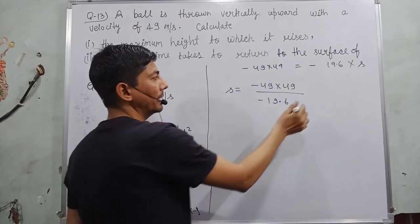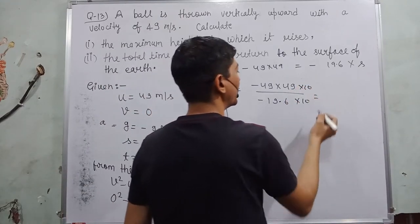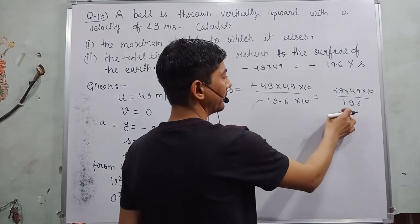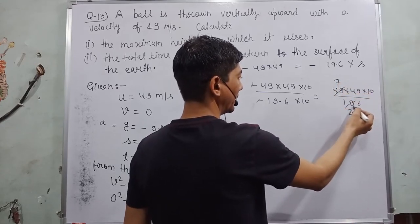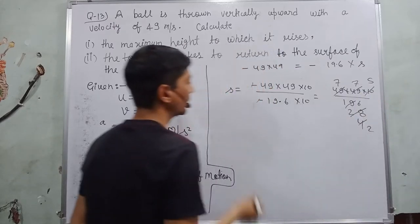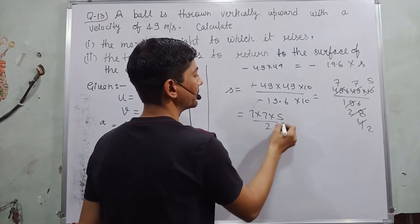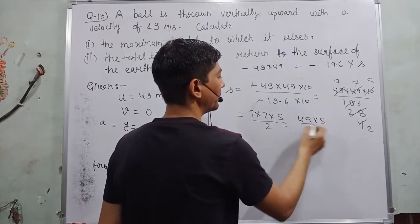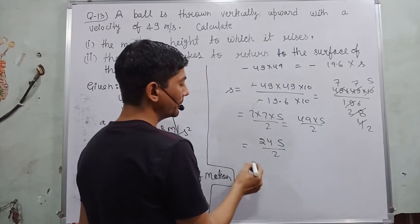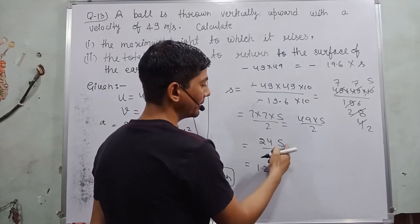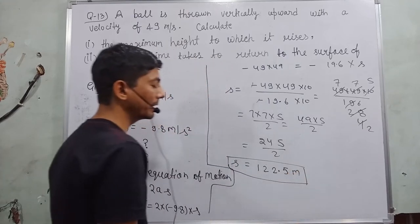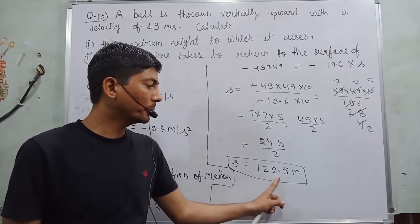So first thing to remove this decimal, I multiply by 10 in numerator and denominator. So minus sign, minus sign cancel out. Here 49 into 49 into 10 over 196. This will divide by 7. 7s of 49 is 7, 2s of 14, 7s of 56, 7, 4s of 28, 7, 7s of 14, 2, 2s of 4, 2, 5s of 10. So here remaining is 7 into 7 into 5 over 2. 7s of 49 into 5 by 2, 5, 9s of 45, 4s of 20, 24 by 2. So when I divide it by 2, 2, 1s of 2, 2, 2s of 4. So maximum height is equal to 122.5 meter. The maximum height s is equal to 122.5 meter.